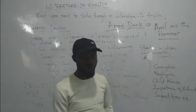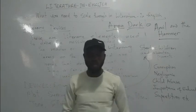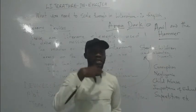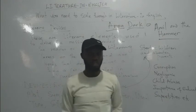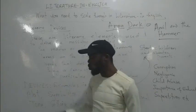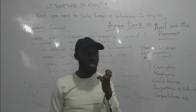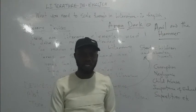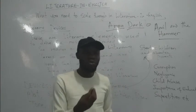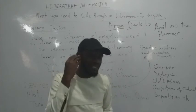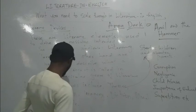Mood talks about the way the speaker feels — the person talking in the story — or the general impression that you have as you read the book. How do you feel? That's the mood. The tone talks about the energy, or the pattern with which the person who is writing — the dramatic persona or the poetic persona — sounds when they talk. That is tone.